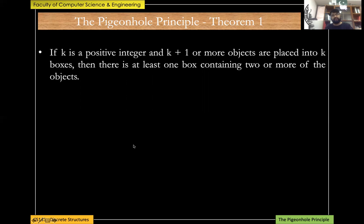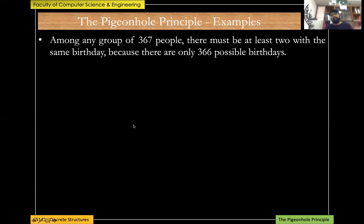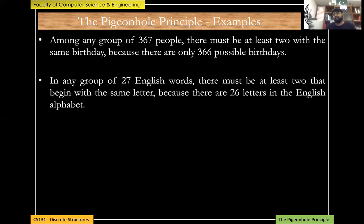For example, if you consider a group of 367 people, there must be at least two with the same birthday, because there are only 366 possible birthdays including February 29th. Similarly, in any group of 27 English words, at least two must begin with the same letter, since there are only 26 letters in the English alphabet.